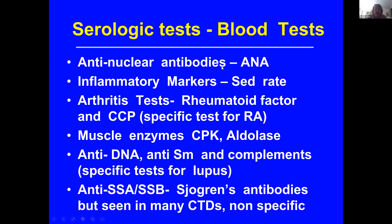Other tests include the sedimentation rate and CRP. Arthritis tests are the rheumatoid factor and the very specific test for rheumatoid arthritis, CCP. We do muscle enzymes including CPK and aldolase. Tests for lupus are anti-DNA, anti-SM, and complements. The Sjogren's antibodies are SSA and SSB, but these antibodies are seen in many connective tissue diseases, can be nonspecific, and do not necessarily associate with Sjogren's syndrome. You can understand how challenging diagnosis can be with all these different antibodies and symptoms.